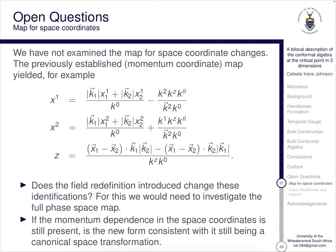Now there are still some open questions. We've not examined the map for space coordinate changes. The previously established momentum coordinate map yielded x1, x2, z in terms of momentum variables. Does the field redefinition introduced change these identifications? For this we would need to investigate the full phase space map. Secondly, if the momentum dependence in the space coordinates is still present, is the new form consistent with it still being a canonical space transformation? Much of the work leading up to this was based on the idea that it's a canonical transformation. Is it still consistent?